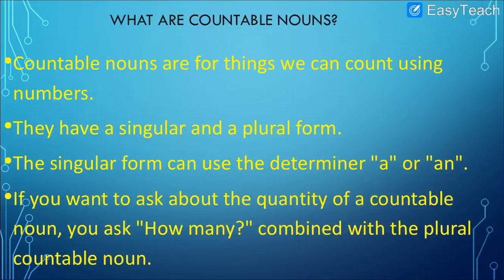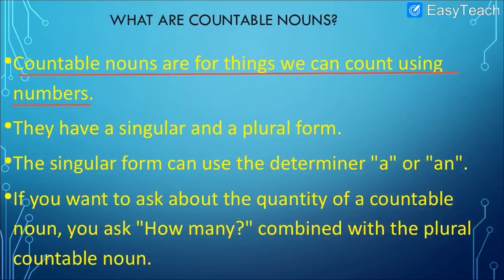Countable nouns are things we can count using numbers. You can count with your fingers — how many pencils, how many erasers. I have three pencils, I have four erasers — that is counting using numbers. That is why the name given is 'countable.'